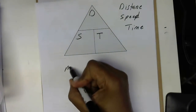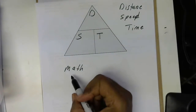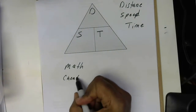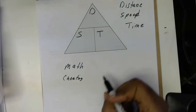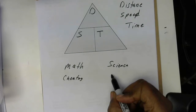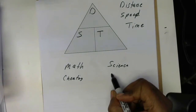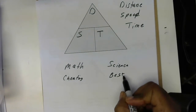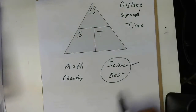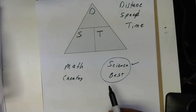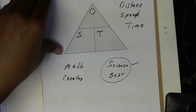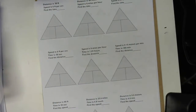Now, in math in general, using the calculator is basically cheating because we want to learn the method. But in science, using a calculator is most times best. Right now we're doing science, so the calculator is the best way to solve a lot of these problems. In math, it'll be cheating because we're trying to teach you how to do the problems. So let's look at some problems here.